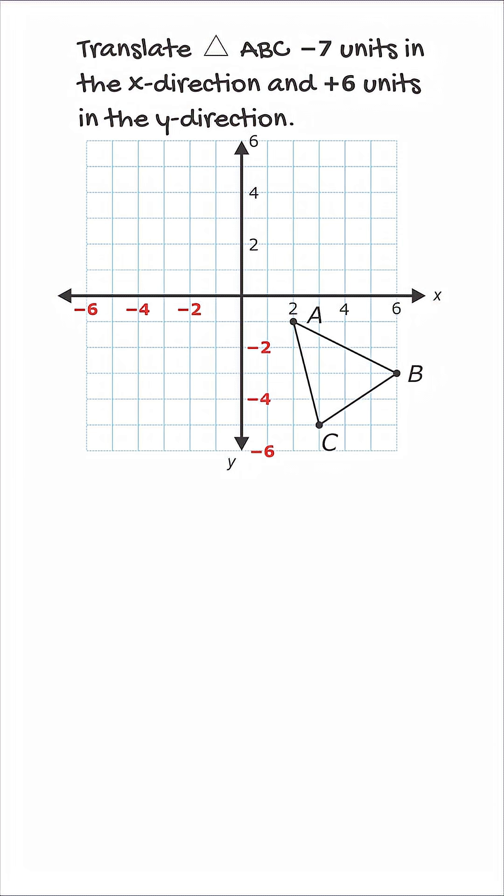Let's start with the first part of the translation, negative 7 in the x direction. That means we're sliding the entire triangle 7 units to the left. Watch how the whole shape moves together. Every point shifts left the same distance. Nothing changes about the triangle itself. It's just sliding across the coordinate plane.